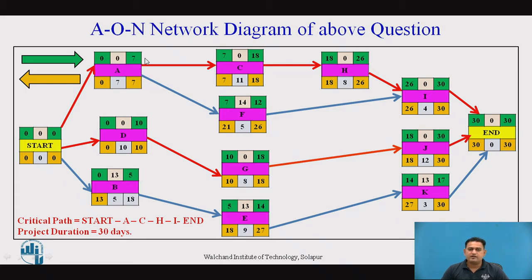The EFT of A becomes the EST of activities C and F because they depend on A, giving EST of 7. Similarly, D has a relationship with G so EST of G carries 10, and E depends on B so EST of E carries 5. The EFT of C, F, G, and E are thus 18, 12, 18, and 14 respectively.